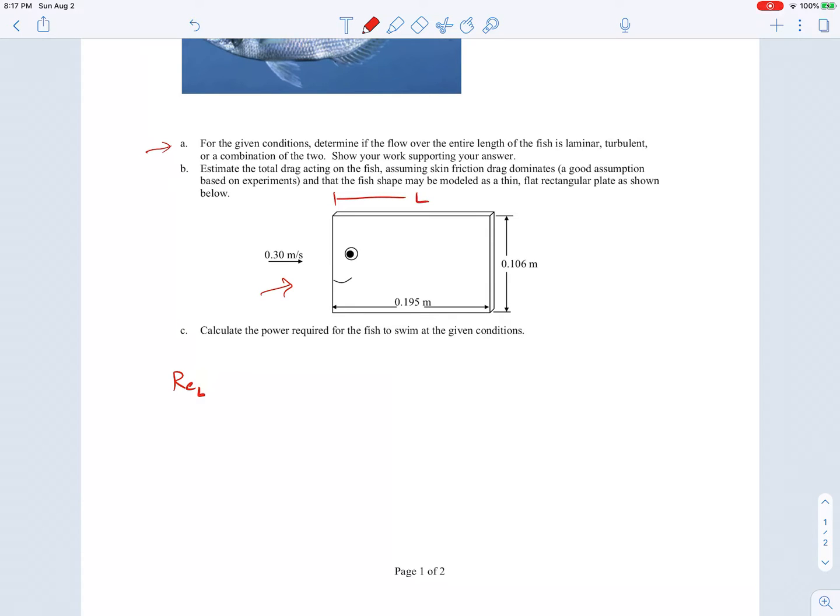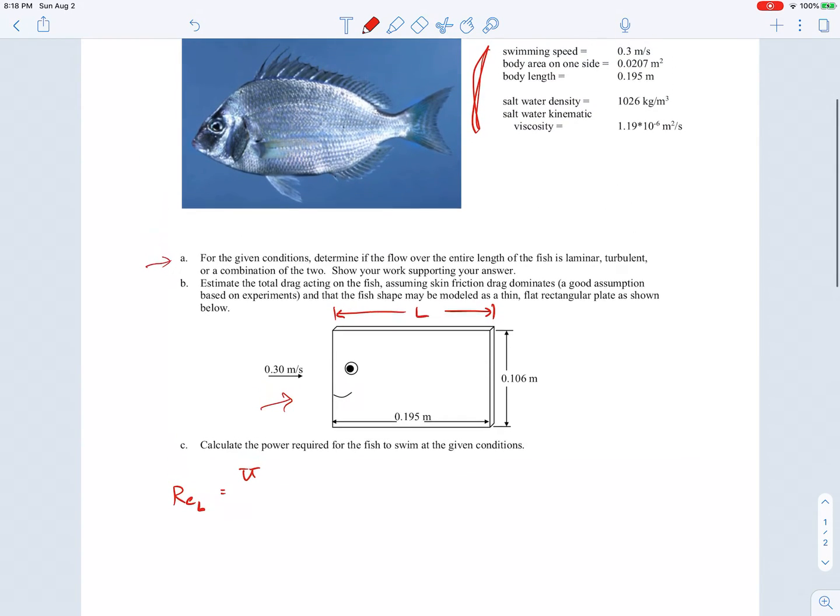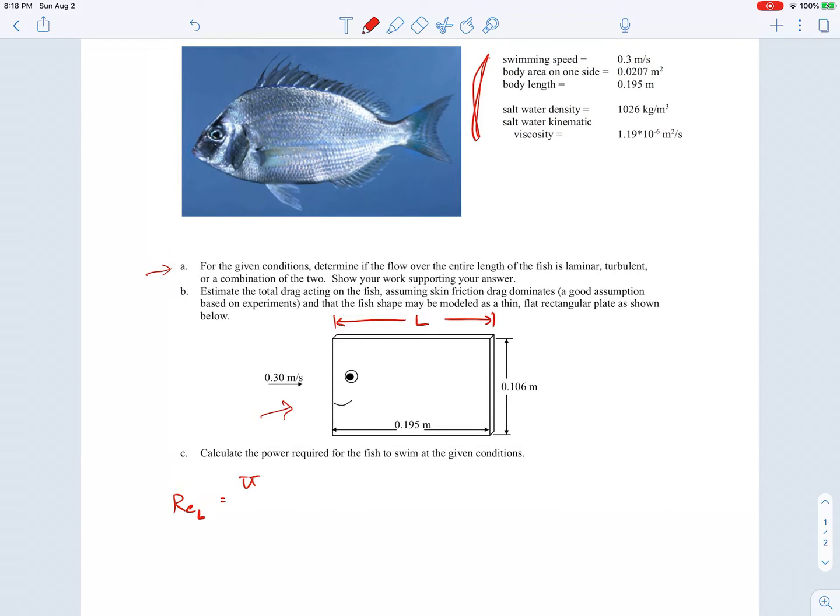The Reynolds number based on the length of the fish will be the velocity of the fish, which is the swimming speed of 0.3 meters per second, times the length. We're trying to find what the Reynolds number is at the back part of the fish to see whether it's laminar or turbulent, divided by the kinematic viscosity of the saltwater.